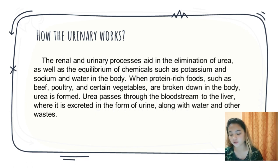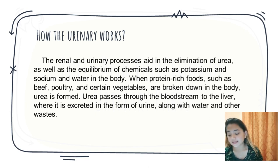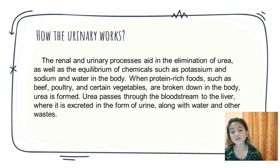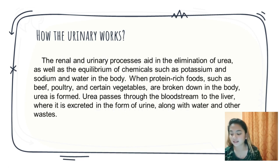When protein-rich foods such as beef, poultry, and certain vegetables are broken down in the body, urea is formed. Urea passes through the bloodstream to the kidneys where it is excreted in the form of urine along with water and other waste. The body takes nutrients from food and converts them to energy; after the body takes what it needs, waste products are left behind in the bowel and blood.